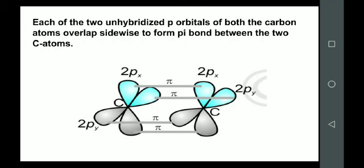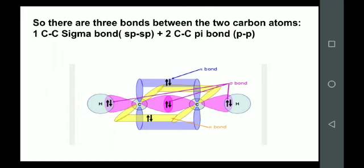There will be two pi bonds: one between the px and px orbitals, and one between the py and py orbitals. In the full picture, each carbon makes four bonds — three with the other carbon atom and one with the hydrogen atom. Out of these four bonds, two are sigma bonds and two are pi bonds. The bonds formed by sp hybrid orbitals are sigma bonds, and the bonds formed by overlap of unhybridized p orbitals are pi bonds. This is how sp hybridization is explained using the example of acetylene.